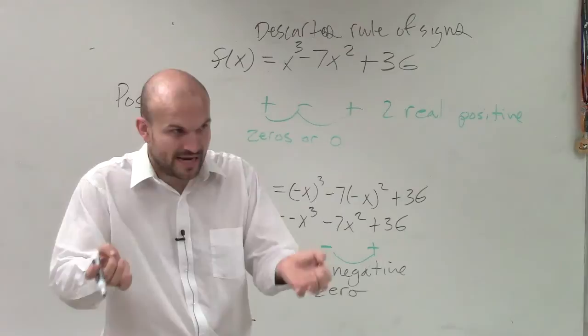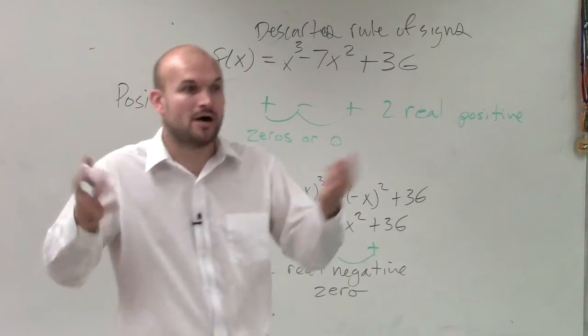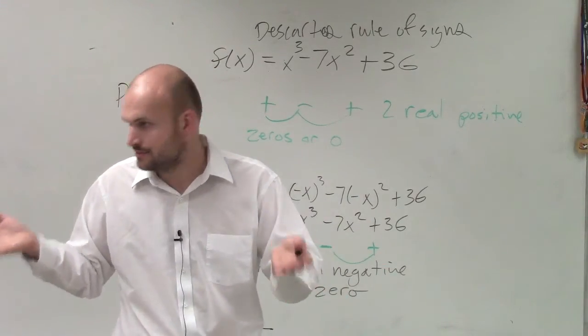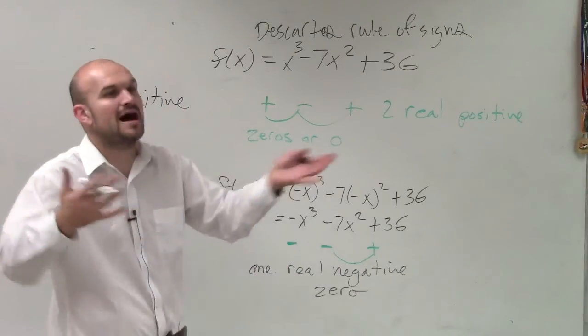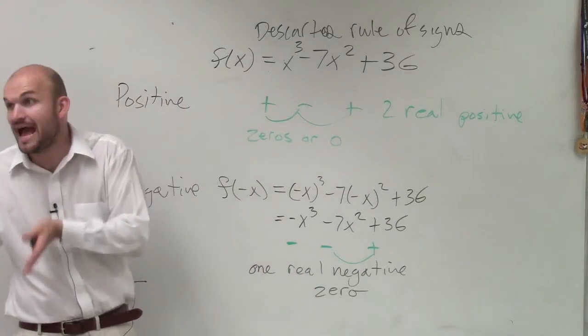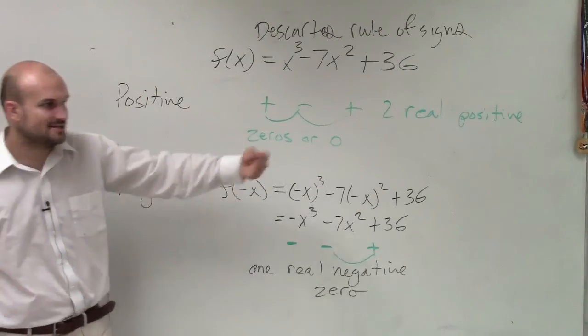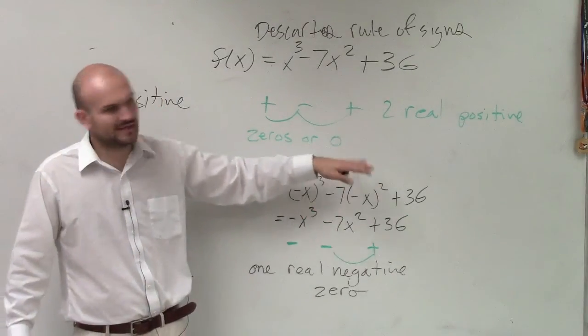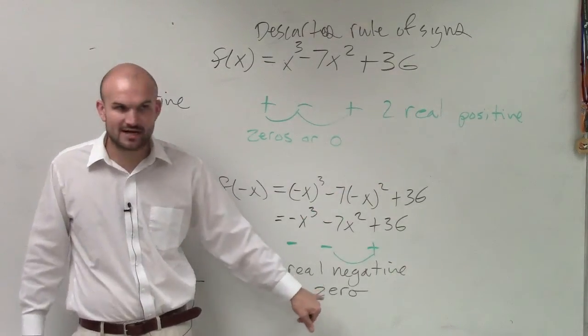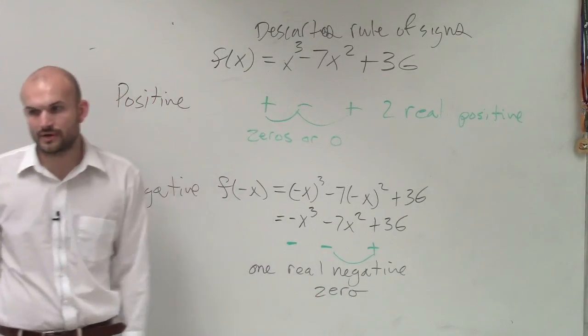Your zeros, that's the x-intercepts. Is it possible to have a negative amount of x-intercepts? No, right? You can't have a negative amount of the x-intercepts. You can have a negative value, but you can't have a negative amount of them. So you keep on subtracting 2 or an even number until you get to 0. Or if you can't subtract 2, then you just leave it as 1. OK?